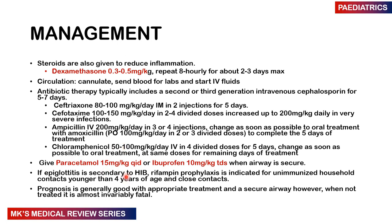Give paracetamol 15 mg/kg QID or ibuprofen 10 mg/kg TDS once the airway is secure. If epiglottitis is secondary to Haemophilus influenzae type B, rifampicin prophylaxis is indicated for unimmunized household contacts and children younger than 4 years with close contact. The prognosis is generally good with appropriate treatment once the airway is secured; however, when treatment is not instituted, the patient will almost invariably die.